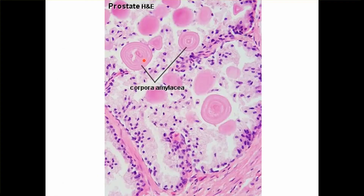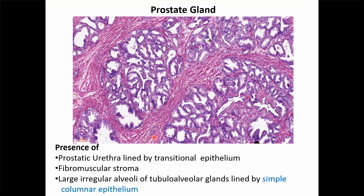Coming to prostate. The prostate is made up of fibromuscular stroma and glandular stroma. Inside the prostate you can see concretions called corpora amylacia. In some slides you can also see the prostatic urethra cutting through, which is lined with transitional epithelium. The white spaces are the glands — large irregular tubular alveolar glands lined with simple columnar epithelium.